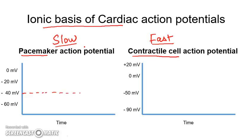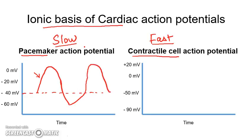In a pacemaker cell, the threshold for firing an action potential is around minus 40 millivolts. Whenever the cell reaches the threshold, it fires an action potential characterized by a slow depolarization. Once the cell returns toward the resting membrane potential of around minus 60, there is a gradual automatic depolarization toward the threshold again without any external stimulus. This gradual automatic depolarization is called the pacemaker potential, which is responsible for the autorhythmicity of pacemaker tissue.